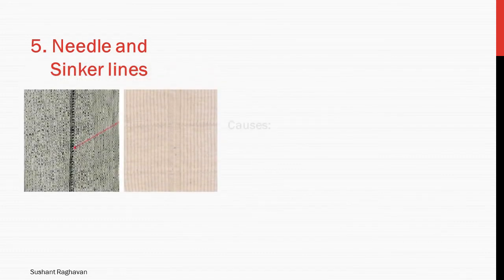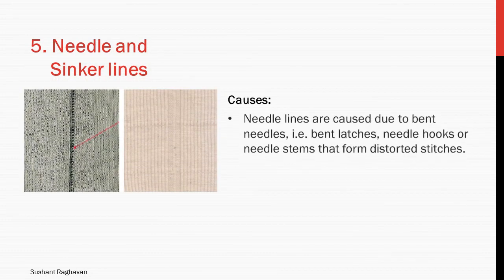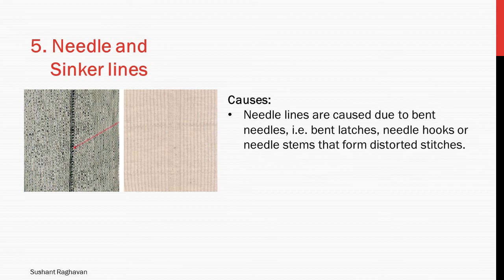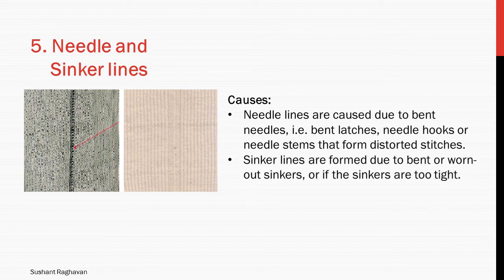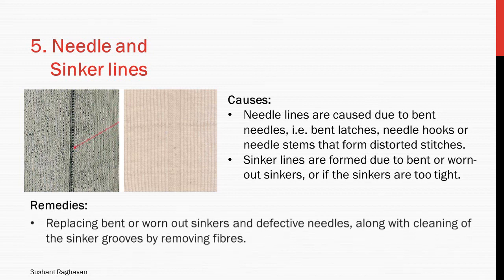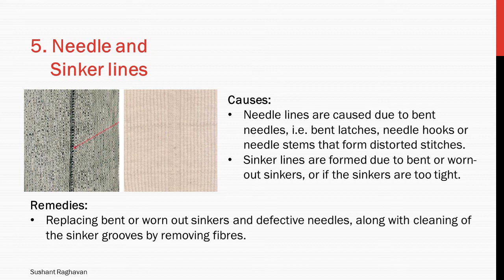Needle and sinker lines. Causes: needle lines are caused due to bent needles, bent latches, needle hooks, or needle stems that form distorted stitches. Sinker lines are formed due to bent or worn-out sinkers, or if the sinkers are too tight. Remedies: replace bent or defective sinkers and needles, along with cleaning of the sinker grooves by removing fibers.